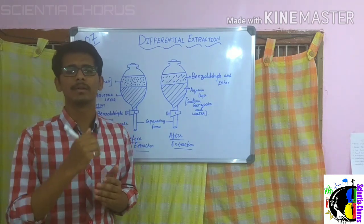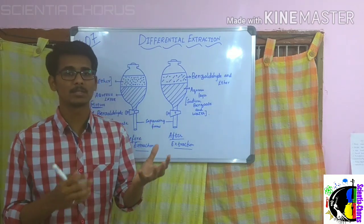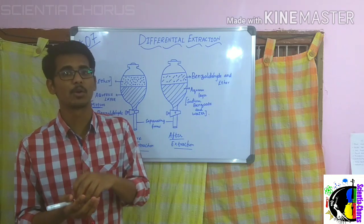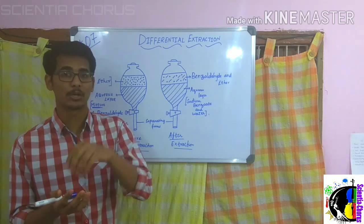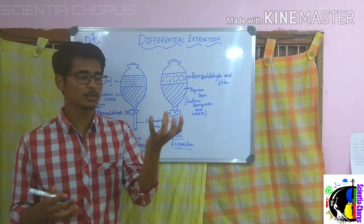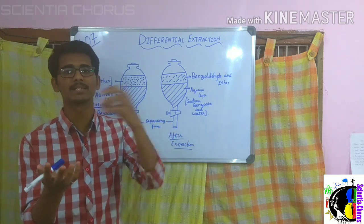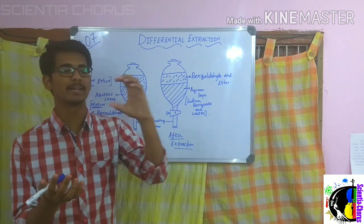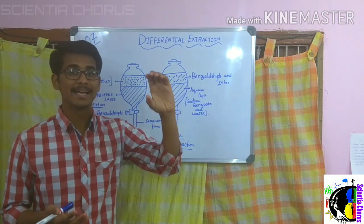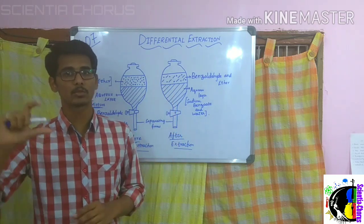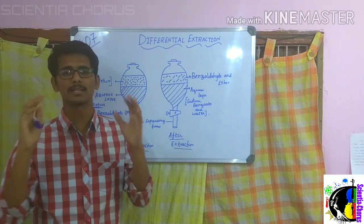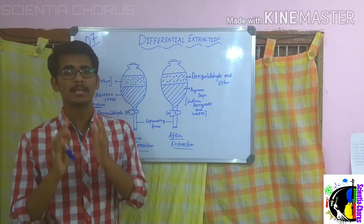What is solubility? The ability of a substance to get dissolved in another substance is called solubility. For example, how do we make a solution? We take a solute and mix it up with a solvent so that we get a solution. The solute will be in lesser quantity and the solvent will be in larger quantity, and thus we get a solution.